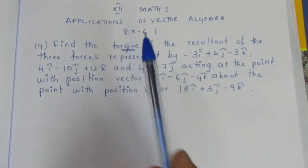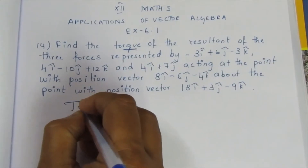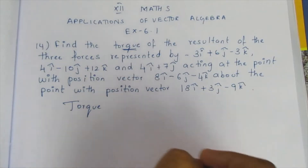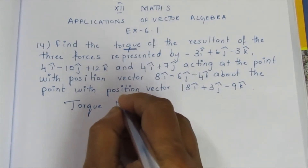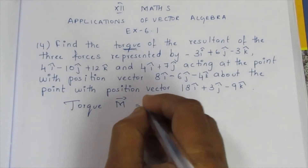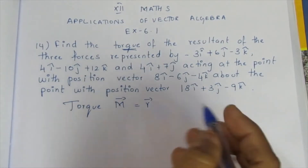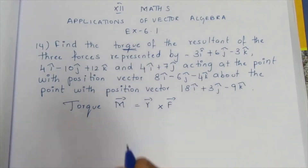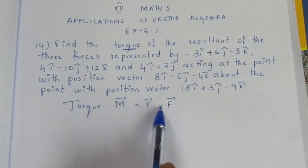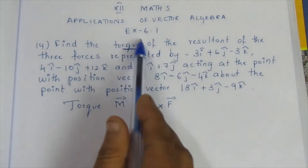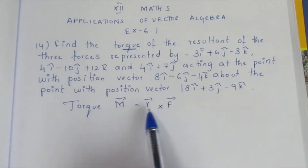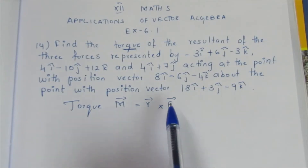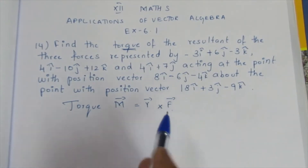This is a direct question on torque. The formula: torque M-vector is equal to r-vector cross F-vector. This is a vector product — a cross product. For vector quantity we do cross product; for scalar quantity we do dot product. So here we will do cross product.